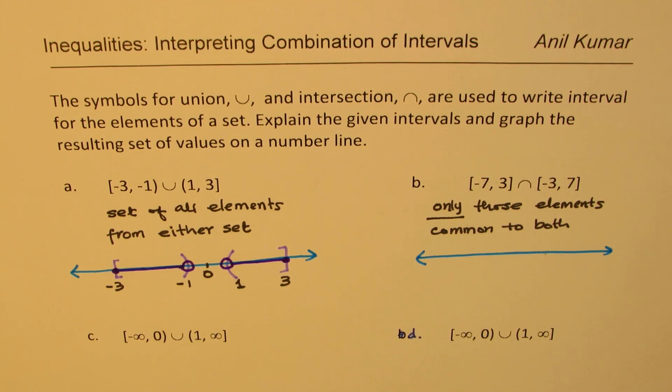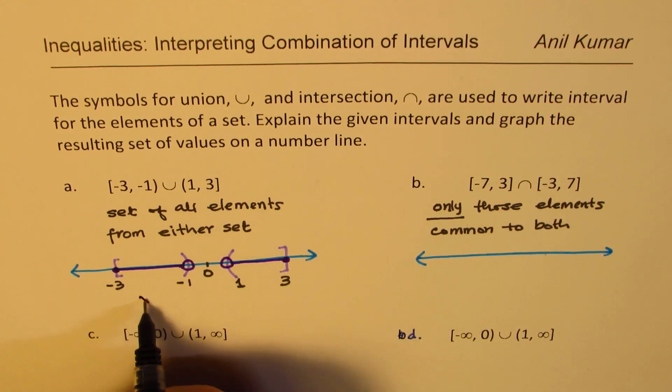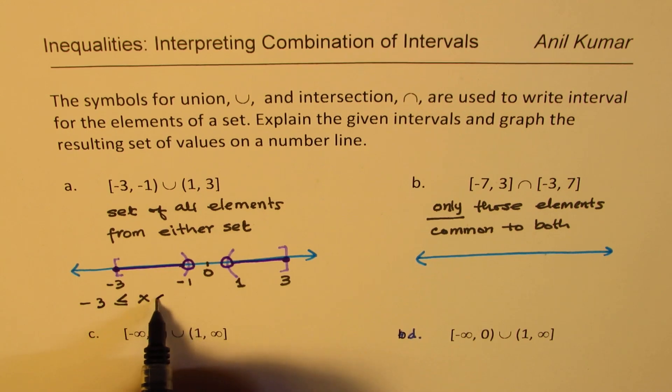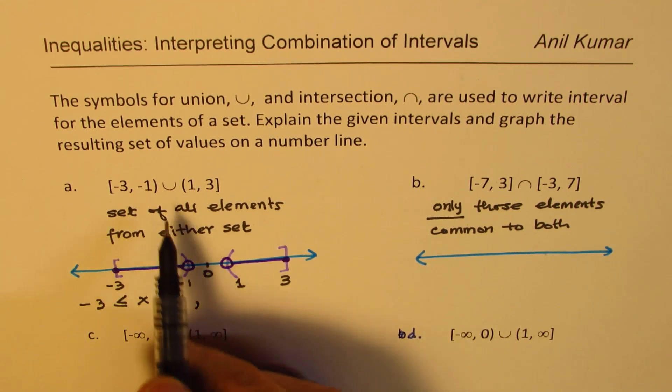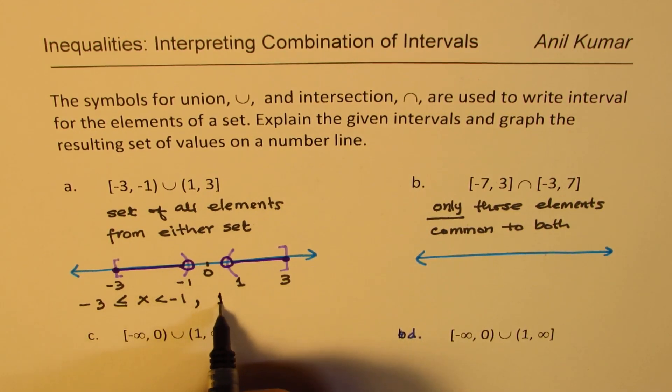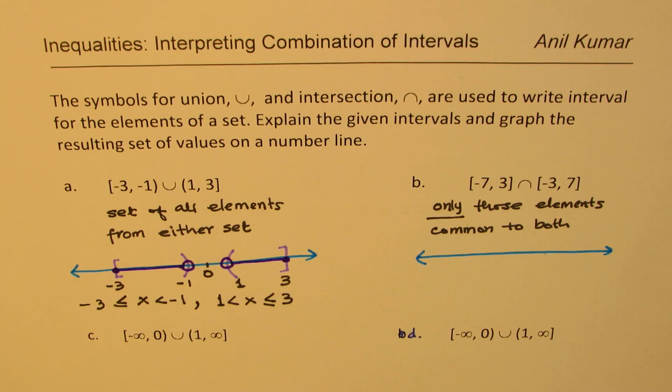In terms of inequalities, you could write like this, where x is greater than or equal to minus 3, and less than minus 1, comma, that is for union many times we write. And this is from 1 to 3. So, these are different ways of representing what was given to us. So, I hope that is absolutely clear.